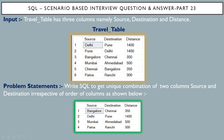The problem statement is: write a SQL query to get unique combination of two columns, that is source and destination, irrespective of order of columns. In row number one we have source as Delhi and destination as Pune and distance is 1400 kilometers.